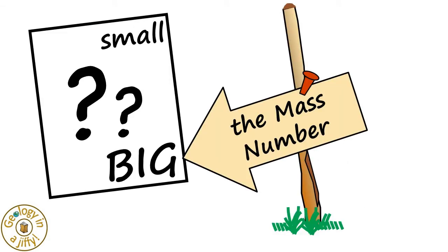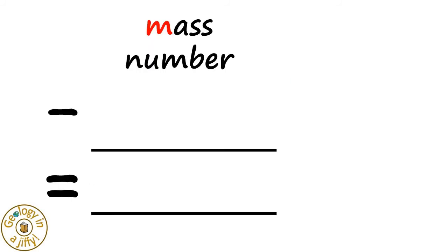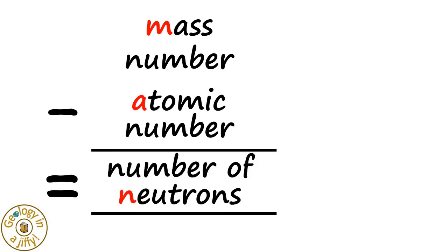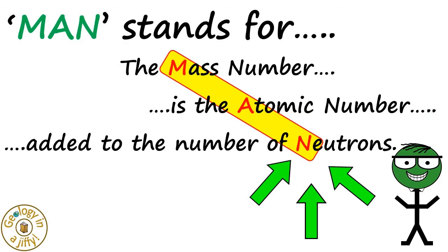We also know from our other video that the big number is the mass number, and that if we know the mass number and then subtract the atomic number, we then know the number of neutrons in the nucleus. Or in other words, man! Wow!